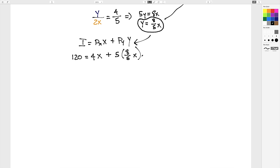Now we can just solve for X, and at this point, it's just algebra. So, 120 equals 4X plus 8X. 120 equals 12X. Divide by 12 on both sides, and you get X equals 10.